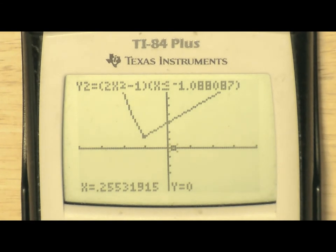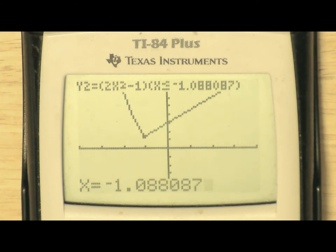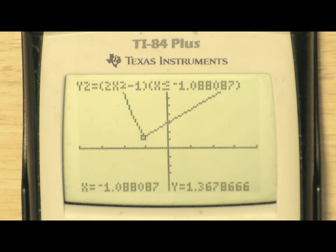Now to complete the proof, we need to show the value of f of negative 1.088087 by entering it directly into the calculator. For this, you need to be inside the domain for that x value. In this case, it's y2, 2x squared minus 1.